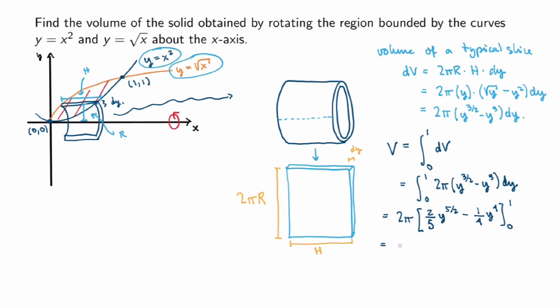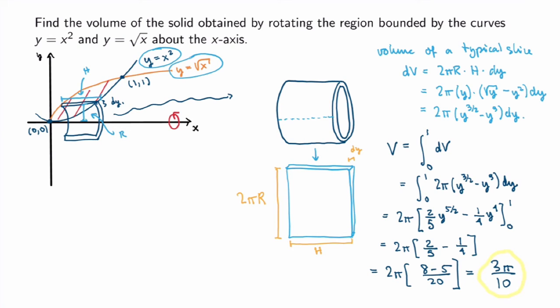Substituting the limits gives 2π times (2/5 − 1/4). Putting everything on a common denominator: 2π · (8 − 5)/20 = 2π · 3/20 = 3π/10, which is indeed the same answer obtained in the previous video.